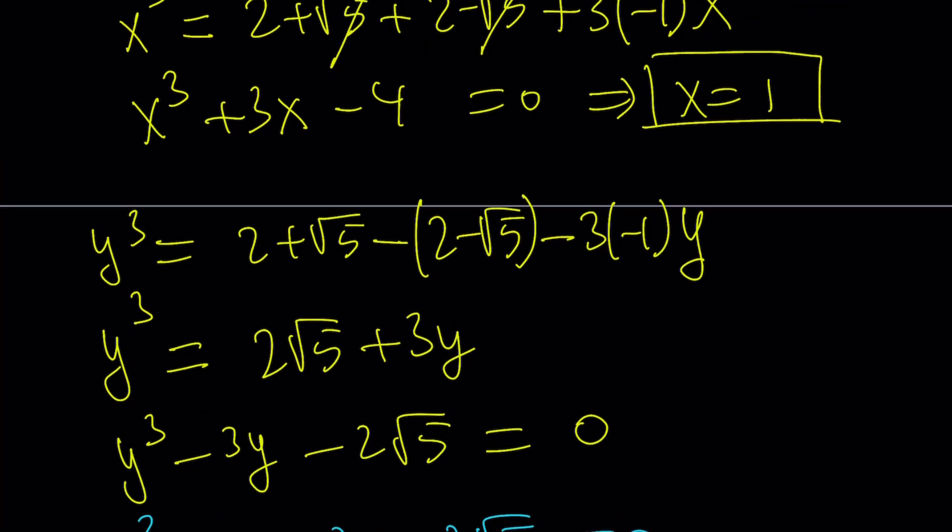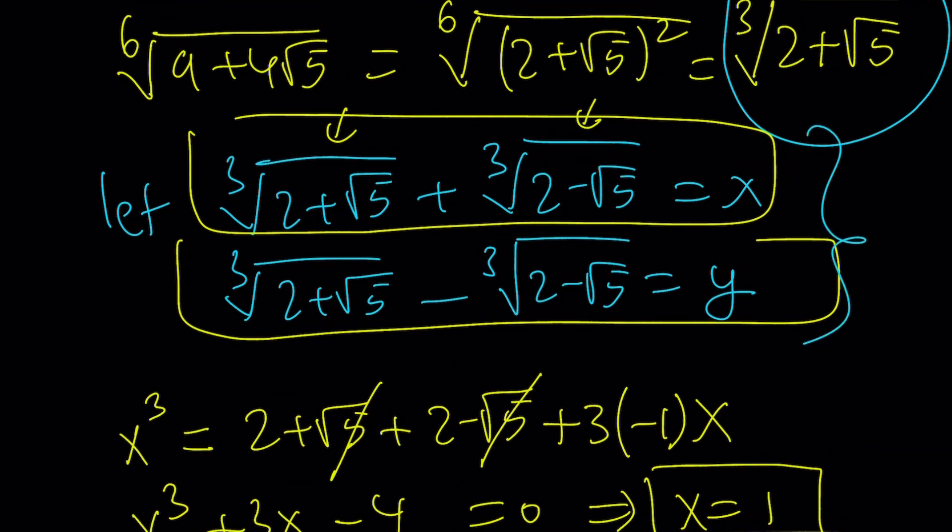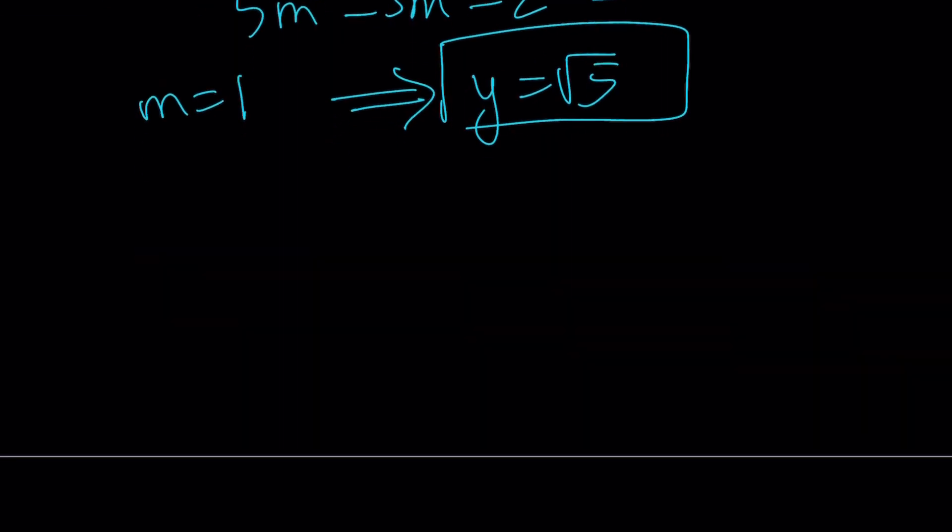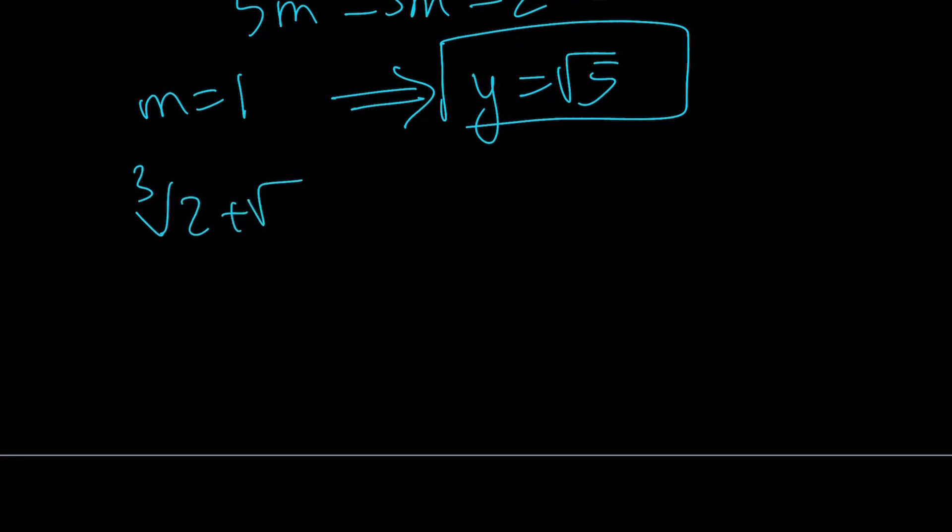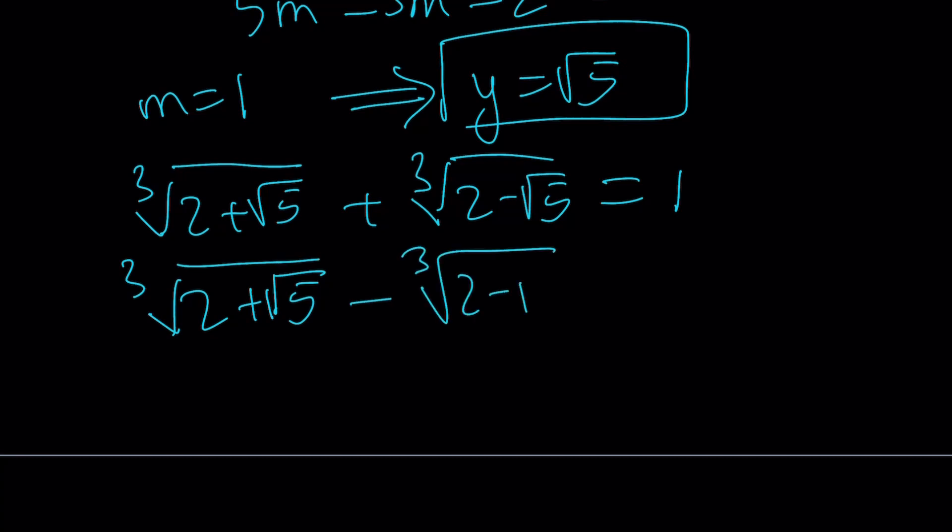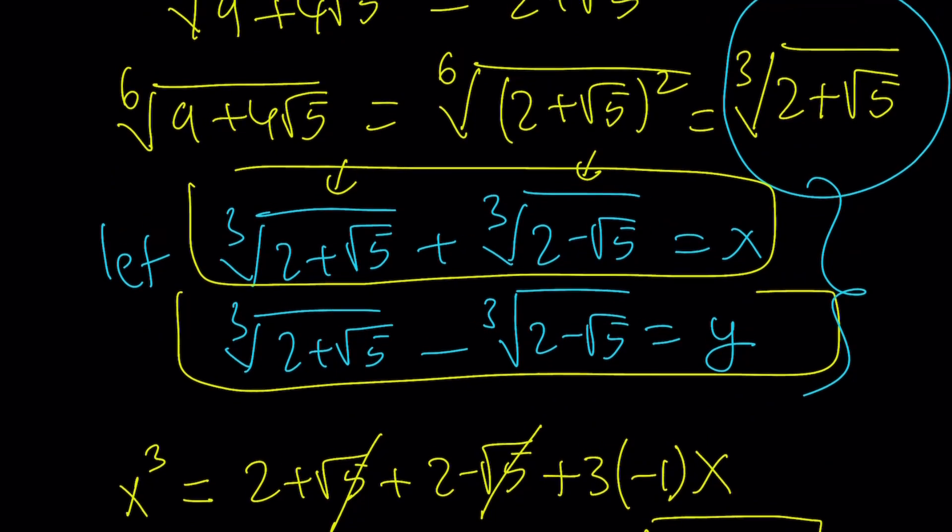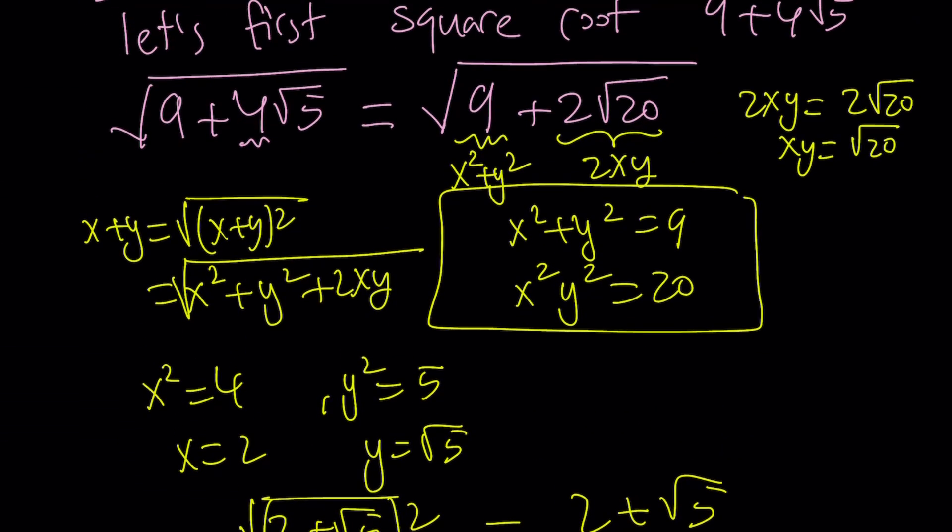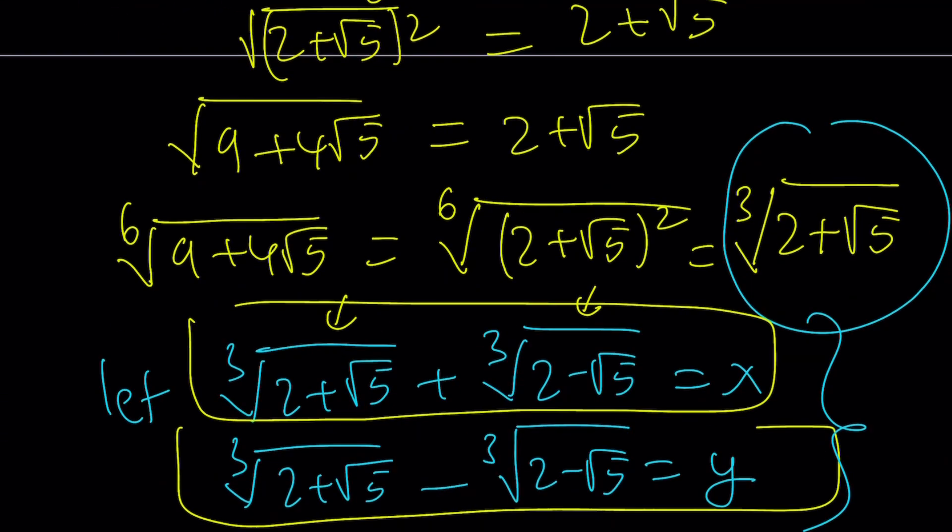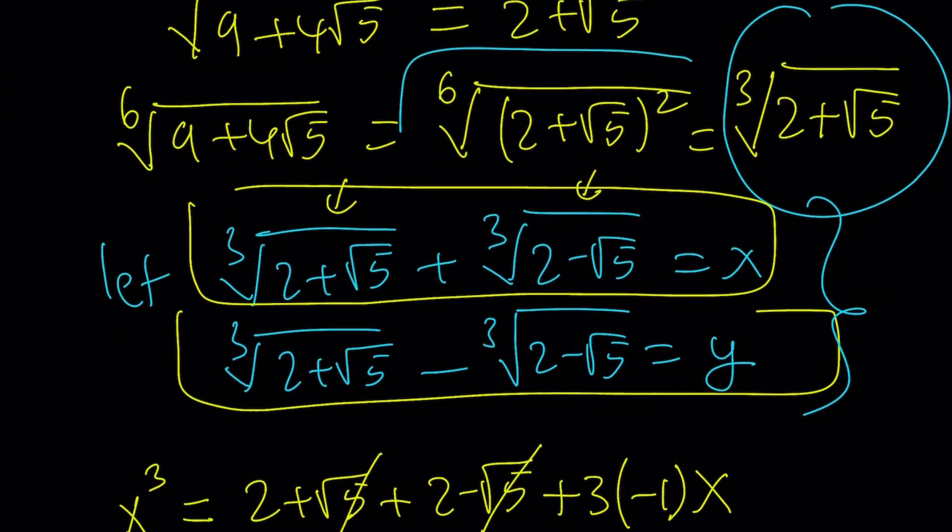Let's go ahead and rewrite this. Remember, we started off with a system in x and y. We have cube root of 2 plus root 5 plus cube root of 2 minus root 5 is equal to x, and x is equal to 1. And the second one is cube root of 2 plus root 5 minus the cube root of 2 minus root 5, and that is equal to y, which is square root of 5. And I'm trying to find the cube root of 2 plus root 5. Because remember, after doing the sixth root of something squared, I ended up with a cube root. That's what I was trying to find.